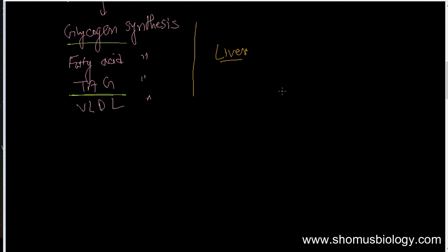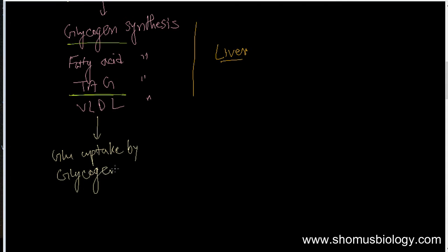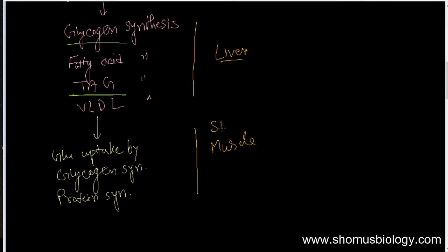As a result of VLDL, fatty acid, triacylglycerol, and glycogen synthesis, glucose uptake by body cells begins. Glycogen synthesis begins, and protein synthesis also begins — we need proteins to sustain our life, particularly in skeletal muscles. In skeletal muscles, glucose uptake is initiated, glycogen synthesis is initiated, and protein synthesis is initiated.